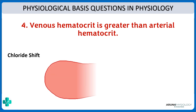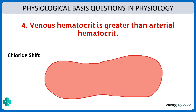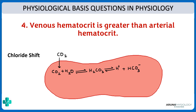What is chloride shift? On the venous side, carbon dioxide from the tissues enters the RBC and combines with water in the presence of carbonic anhydrase to form carbonic acid, which dissociates into H⁺ and bicarbonate. The H⁺ combines with hemoglobin as a buffer, while bicarbonate is pumped out in exchange for chloride. Chloride enters the RBC along with some water, being an osmotically active particle — that is why the volume of the venous RBC is greater and thus the hematocrit is higher.